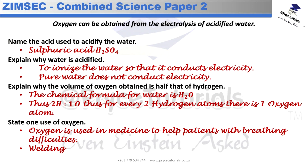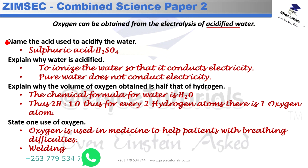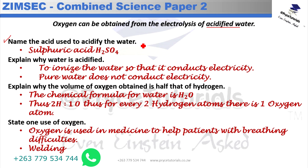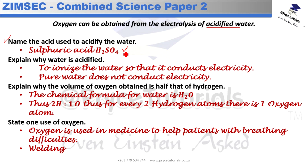The next question states that oxygen can be obtained from electrolysis of acidified water — and yes, that is true. They want us to name the acid used to acidify the water. We acidify the water using sulfuric acid, H₂SO₄.